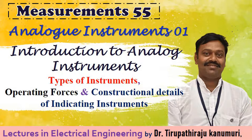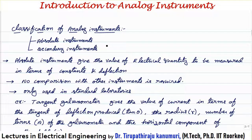Today we are going to discuss essentials of analog indicating instruments. First, let us start with the classification of analog instruments. Broadly, analog instruments can be classified into two categories: the first is called the absolute instrument and the second type is the secondary instrument.